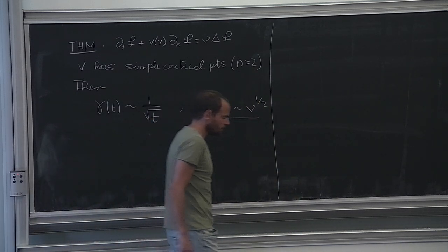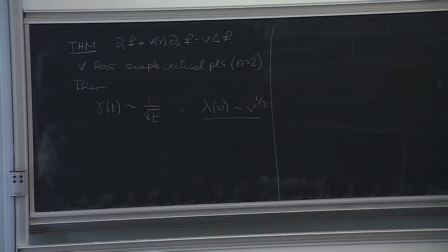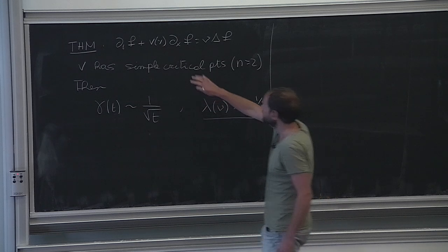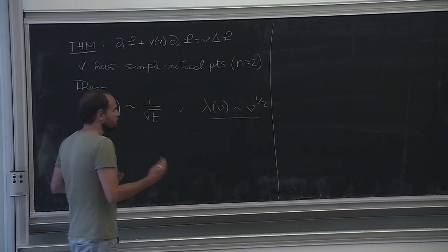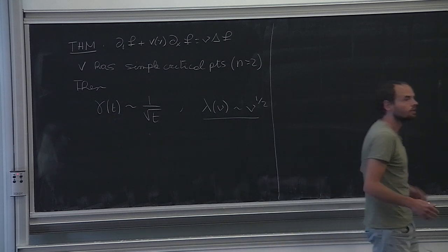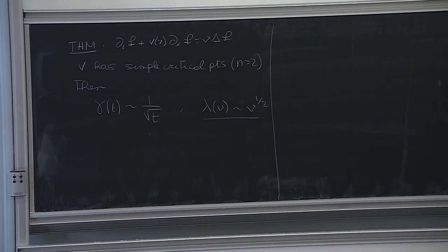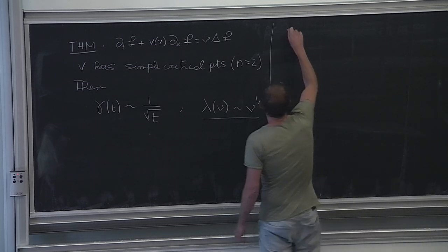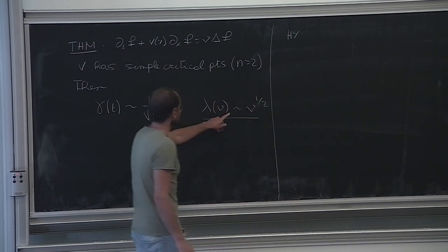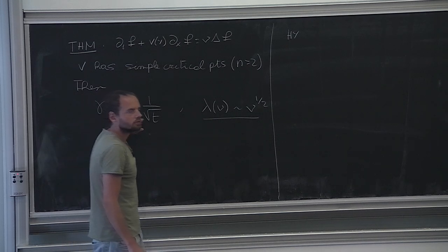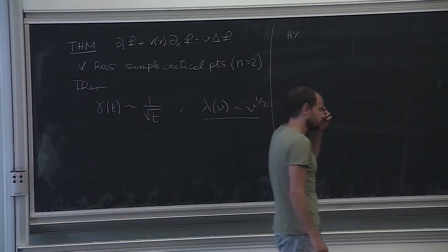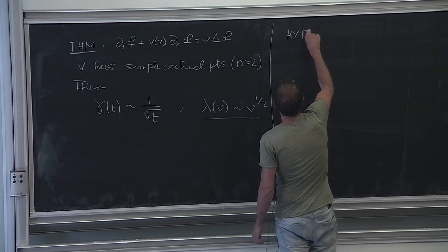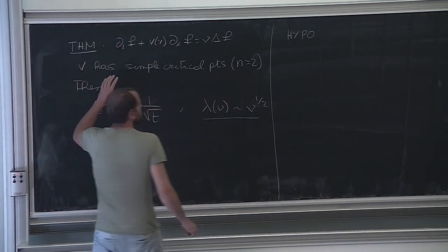Hypocoercivity is a proof using a spectral approach — looking at the properties of the spectrum of the linear operator appearing here. There is also a proof coming from ideas of hypoellipticity of Hörmander, and I'll tell you a little bit why that's relevant as well. I will prove the dissipation part; the mixing part is a much shorter proof with different techniques — maybe I'll write a line at the end if we have time.